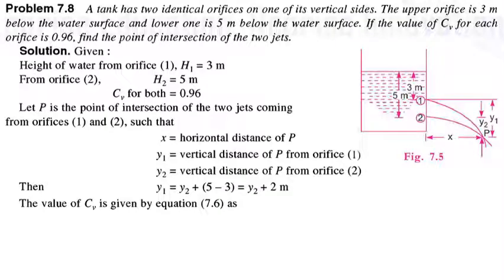The height of water from the first orifice is 3 meters — that is, the upper orifice is 3 meters below the water surface, and the lower one is 5 meters below the water surface, as marked in the figure. The coefficient of velocity CV for each orifice is 0.96. We need to find the point P, which is at a horizontal distance x and vertical distances y1 and y2 from the orifices.